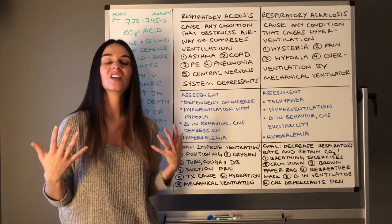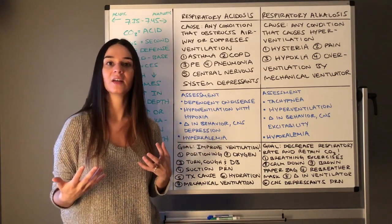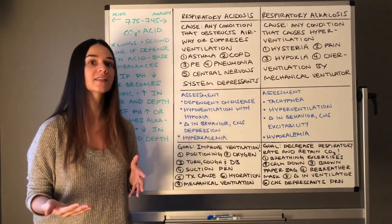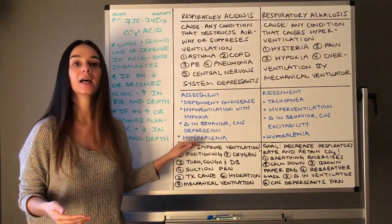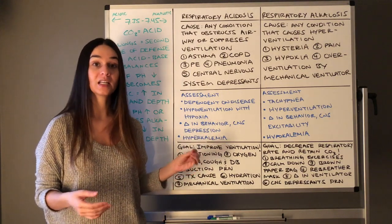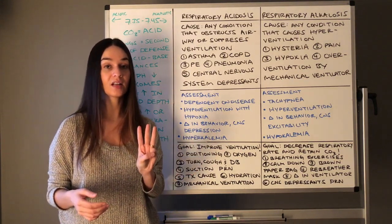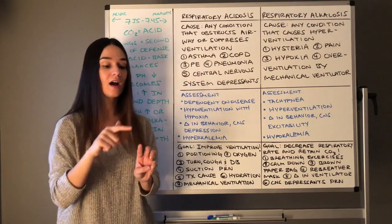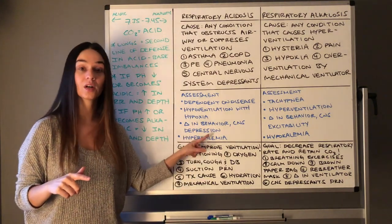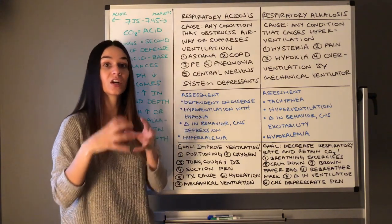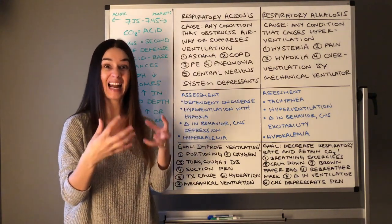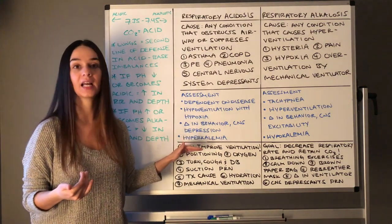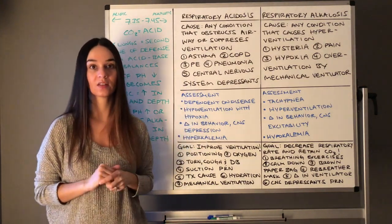Think about how a sedated client would look — that's how CNS depression presents in your assessment. If the body has started to cope, remember those three systems: buffer, respiratory, and kidneys. If the buffer has started to work, it shifts hydrogen ions into the cell and brings potassium out. That's why we can see hyperkalemia with respiratory acidosis as well.